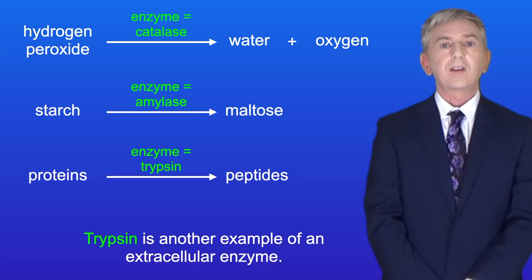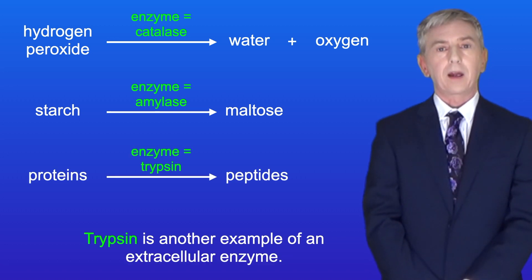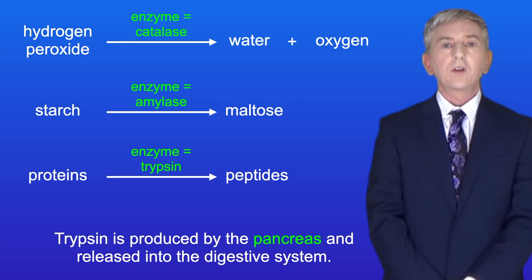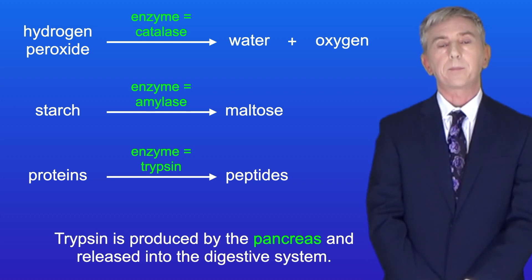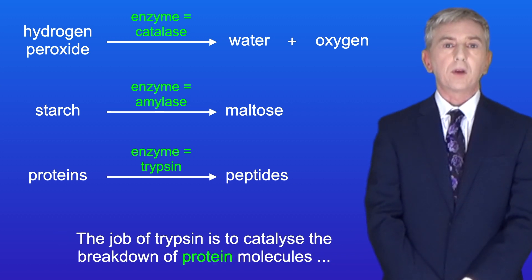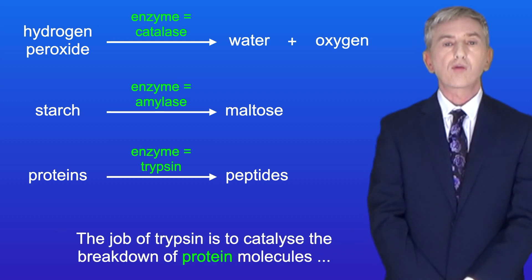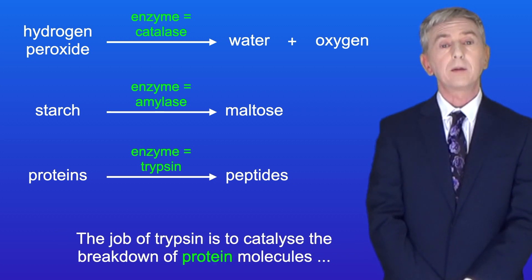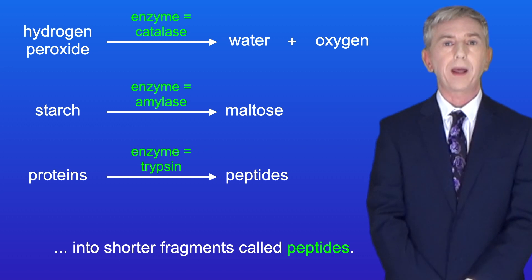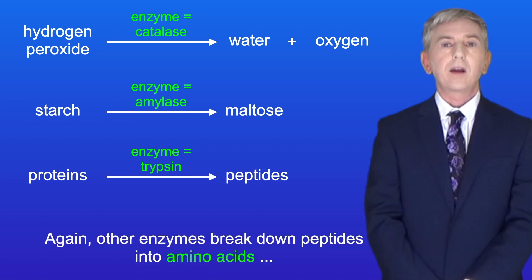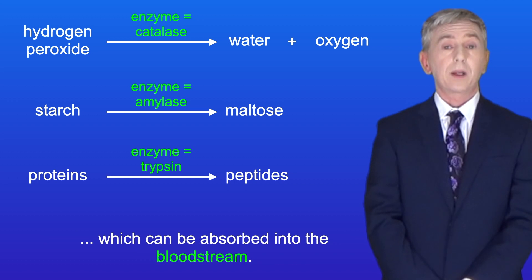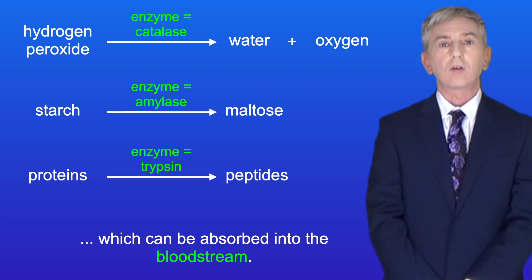Trypsin is another example of an extracellular enzyme. Trypsin is produced by the pancreas and released into the digestive system. The job of trypsin is to catalyse the breakdown of protein molecules into shorter fragments called peptides. Other enzymes break down peptides into amino acids, which can be absorbed into the bloodstream.